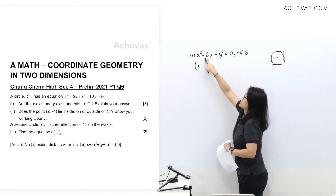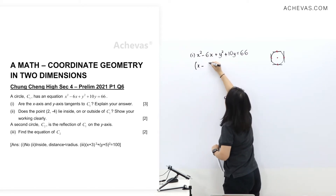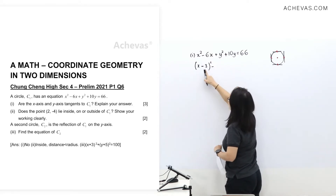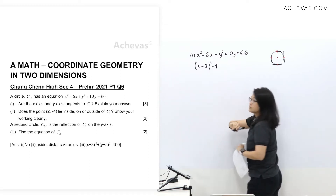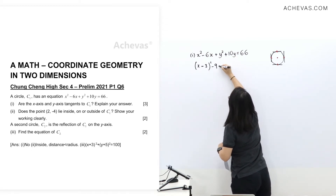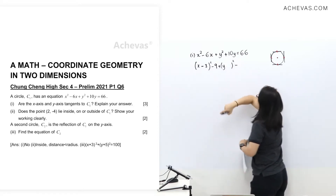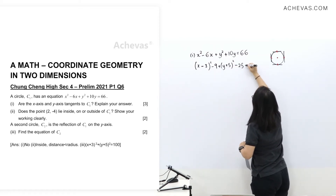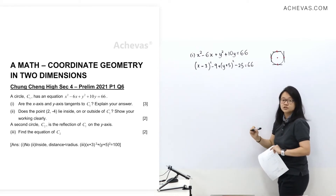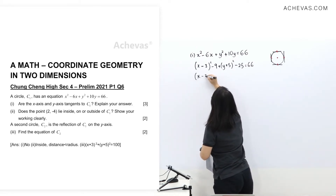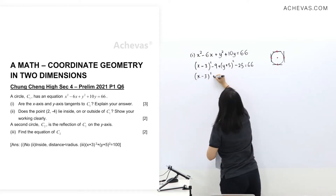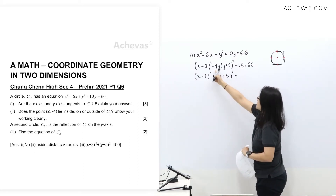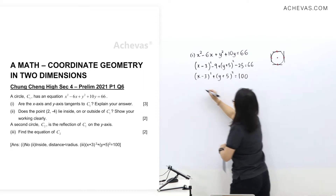I'm going to complete the square based on these two terms. Divide by two to get 3, then square this number. For the y terms: positive 10 divided by two, then square that number. Moving numbers to the right-hand side: 66 plus 25 plus 9 gives you 100.